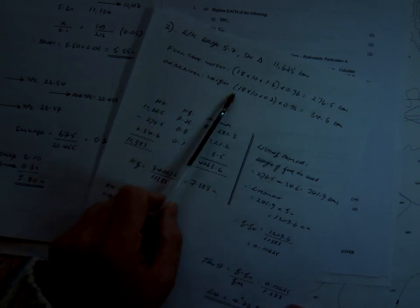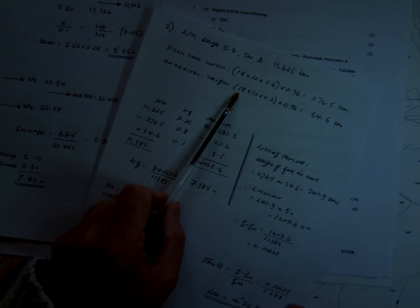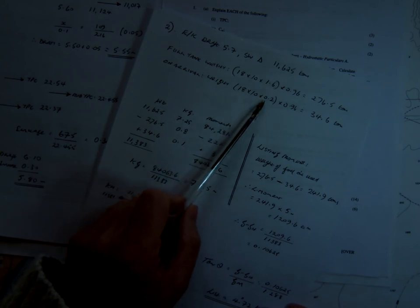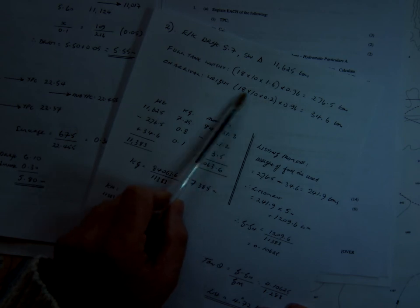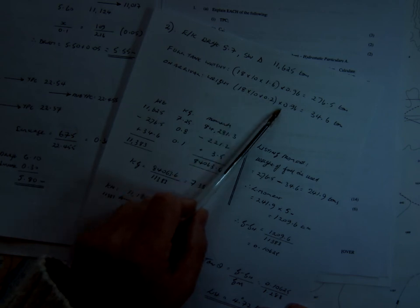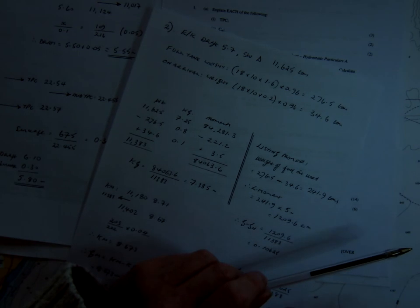On arrival, the weight that's remaining is the ullage 1.4 minus the 1.6, so that's 0.2 is the depth, so it's 18 by 10 by 0.2 by 0.96. So on arrival, we have a weight of 34.6.